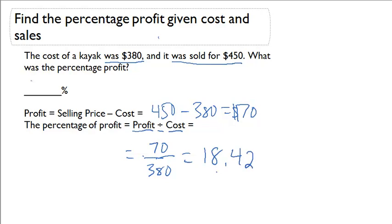So if you have a kayak that cost $380 and sold it for $450, your percentage profit is 18.42%.